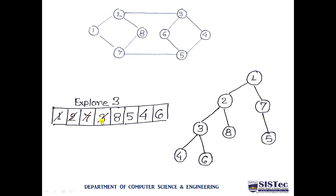Next, we explore node 3, which is now at the front. From node 3, we have three paths: toward 2, toward 6, and toward 4. Node 2 is already visited, so we skip it. We take 4 first, then 6, following order. In the spanning tree, node 3 has left child 4 and right child 6.